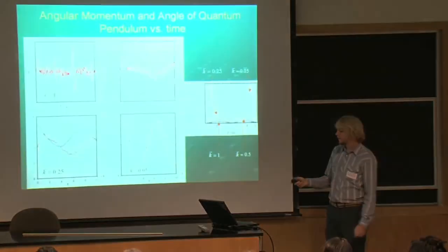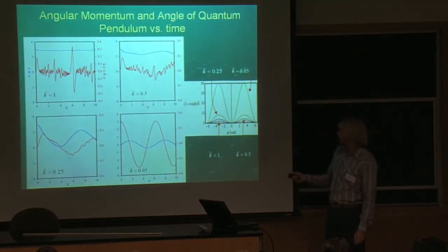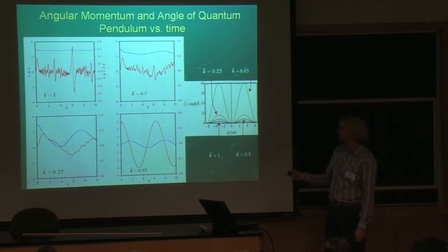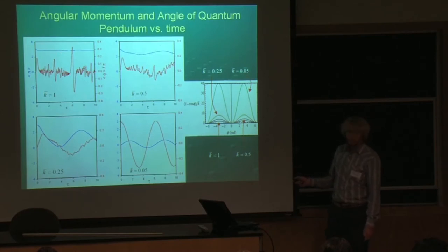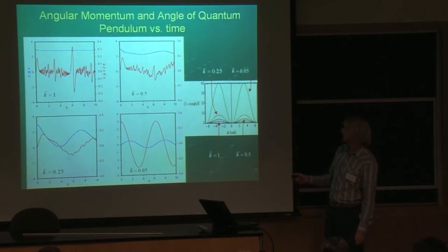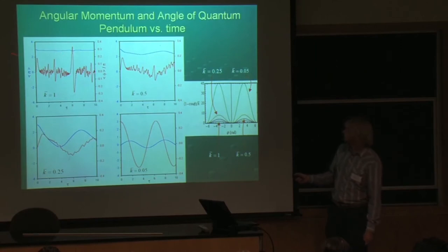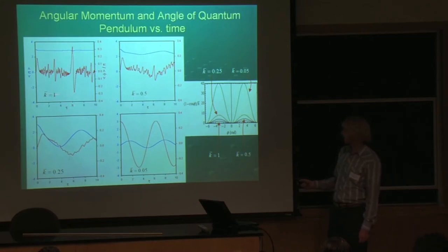This slide shows some of this. We have in red the expectation value of the angle, and in blue the expectation value of the angular momentum. The parameter K determines quantum mechanical versus classical behavior.